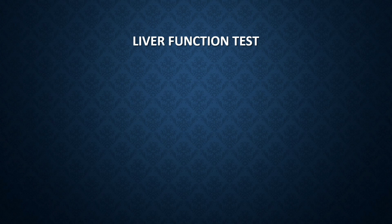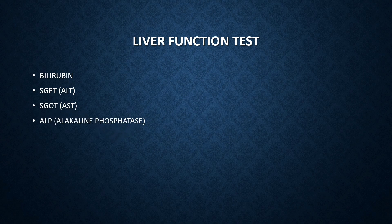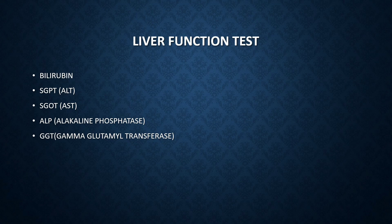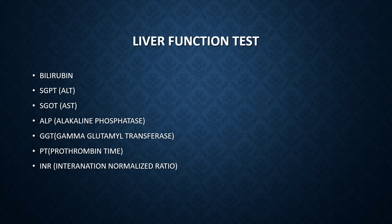Liver function tests include bilirubin, SGPT or ALT, SGOT or AST, alkaline phosphatase (ALP), GGT (gamma-glutamyl transferase), PT/INR — prothrombin time and international normalized ratio — and albumin. These are all the components of the liver function test.